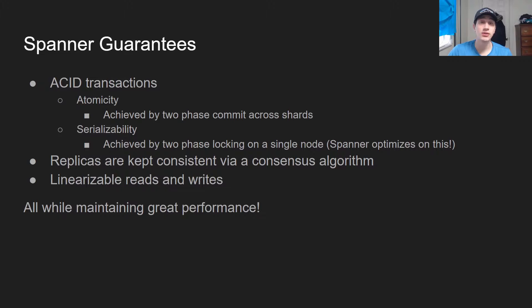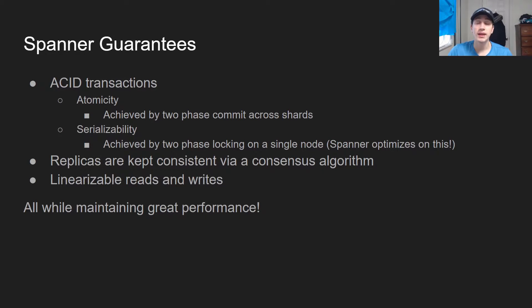So what are the Spanner guarantees? For starters, there are ACID transactions, which means you get atomic operations — achieved via two-phase commit. You also get serializability, achieved by two-phase locking, which is when you have shared and exclusive locks on every row. There are also a bunch of replicas to ensure availability, kept consistent via Paxos instead of Raft — there are some slight differences between the two, but that's probably for a future video. And then there are linearizable reads and writes, meaning every single read and write is totally ordered and consistent with causality.